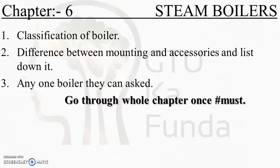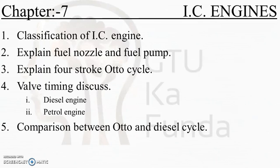For mechanical engineering students, the use of steam boilers will be found in power plant engineering, where the second chapter is on boilers. There will be some high pressure boilers, but if your fundamentals are clear it will be easy. For the IC engines chapter, topics include classification of IC engines, explaining the fuel nozzle and fuel pump, and the four-stroke Otto cycle valve timing.